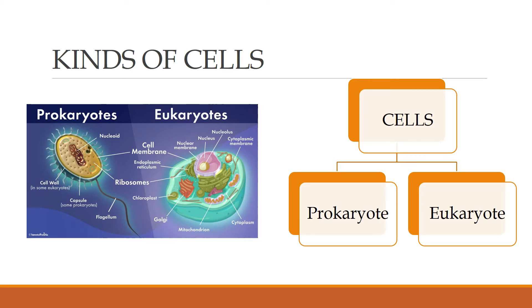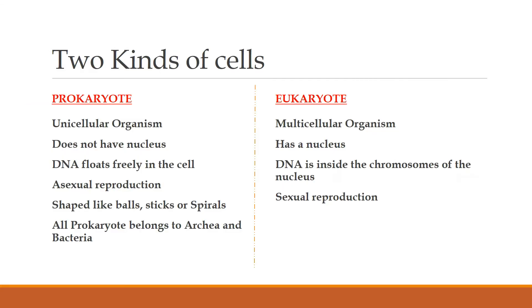let's see what are the kinds of cells. The cells are into two kinds: prokaryote and eukaryote. If we know the difference between prokaryote and eukaryote, it will help us to understand the domains of life. So let's see what prokaryote and eukaryote are.